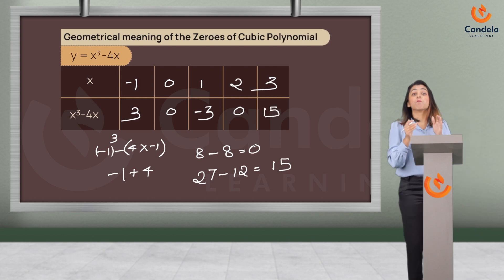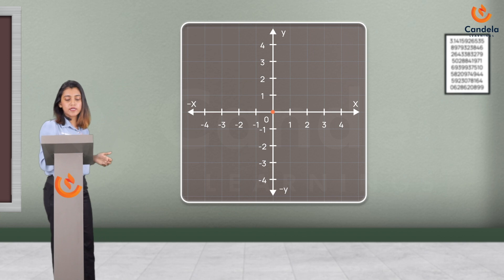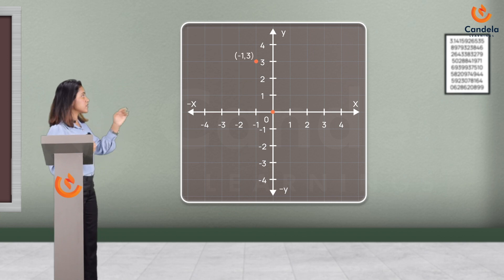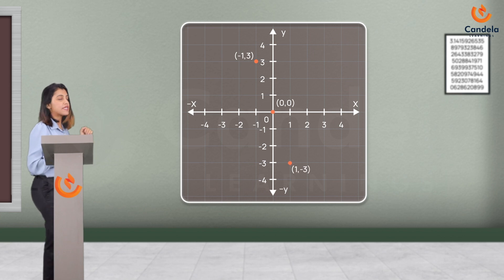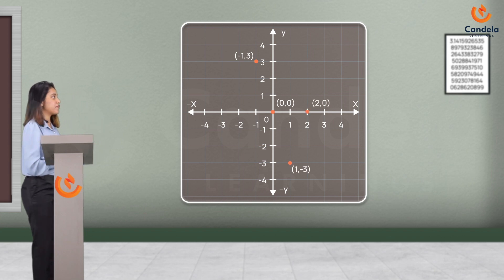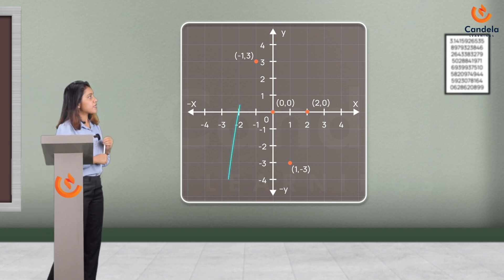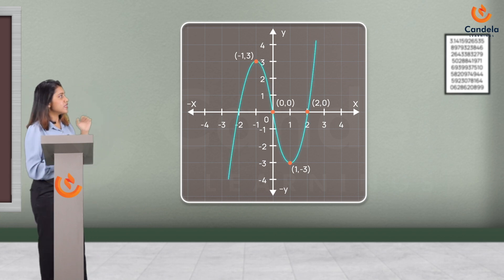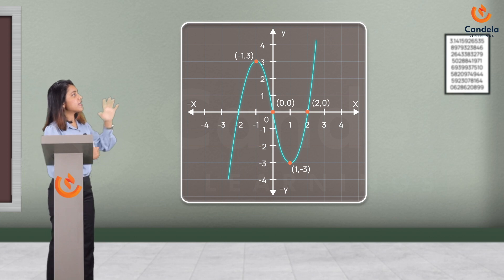And we are going to mark these points: (−1, 3), (0, 0), (1, −3), (2, 0), and (3, 15). And let's join these points. You can see a curve.